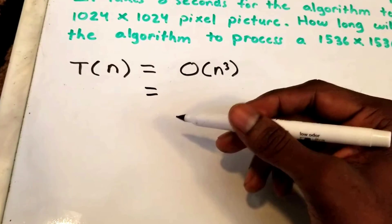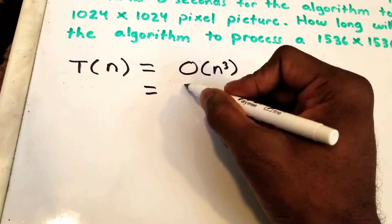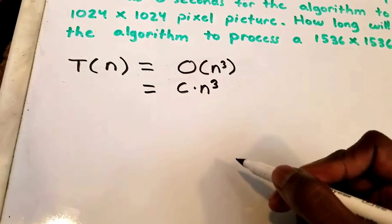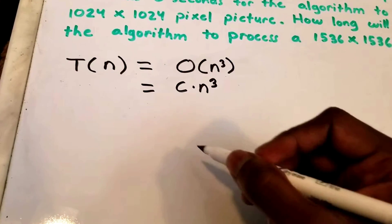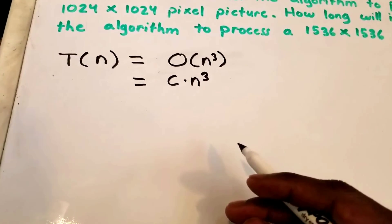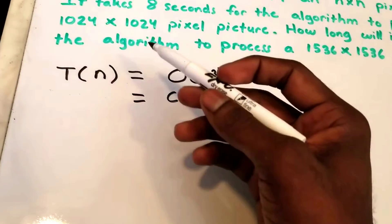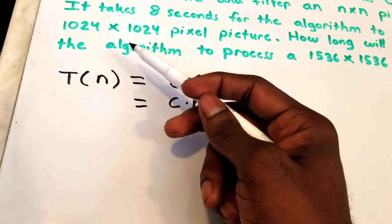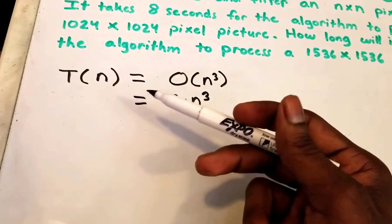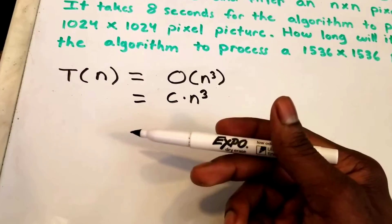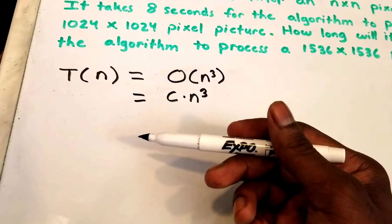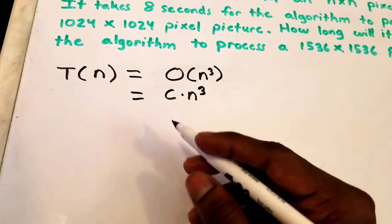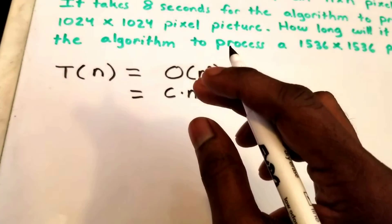When we say something is O(n³), we're saying that the function grows less than or equal to some constant times n³. We're given an example: a 1024 by 1024 pixel picture, and we're given the time it takes to execute that.